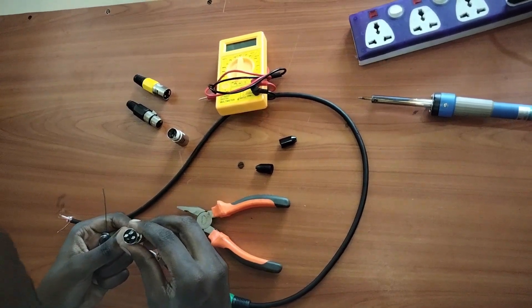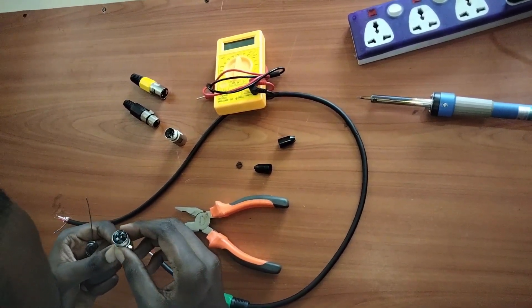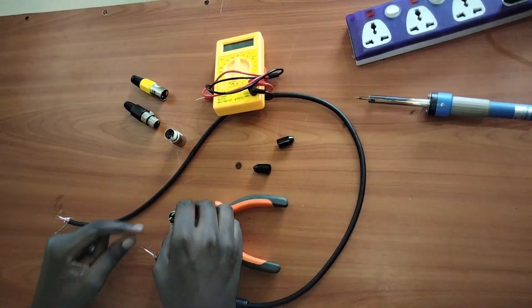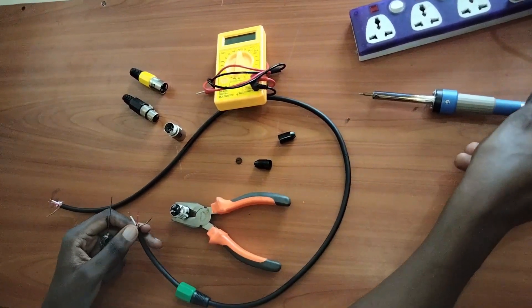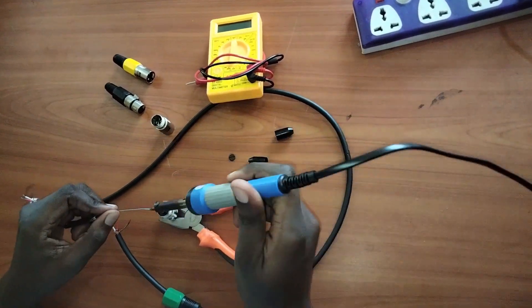Then as I've told you, let me look for number 2. This is number 2, and number 2 is where the red goes. Let me attach a little bit of solder.